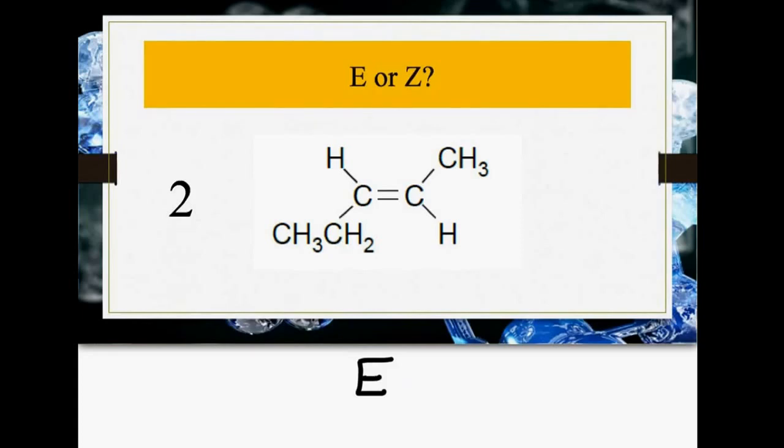This molecule would be called E, and then it's 1, 2, 3, 4, 5, so pent-2-ene.